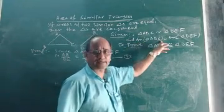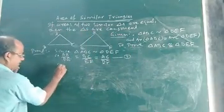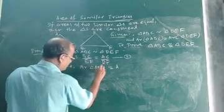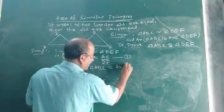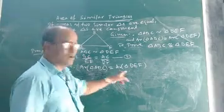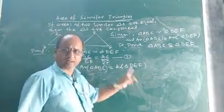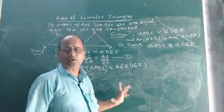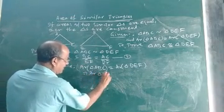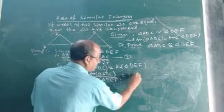Also, since area of triangle ABC is equal to area of triangle DEF, they are having equal areas. So if we take the ratio of the areas of these two triangles, it will be equal to 1. That means, area of triangle ABC divided by area of triangle DEF will be equal to 1. Let this be equation 2.